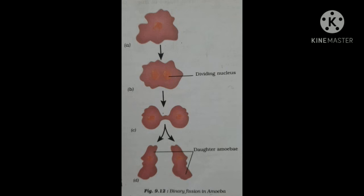So from a single cell two daughter cells are formed. This type of reproduction is called binary fission — 'fission' means to separate or become distinct. In this process, there is no requirement of male or female gametes, no requirement of another parent; only a single parent is involved. That is why this reproduction is asexual reproduction.